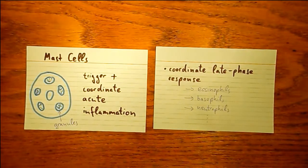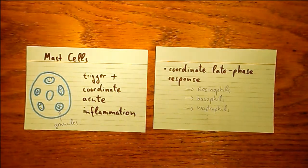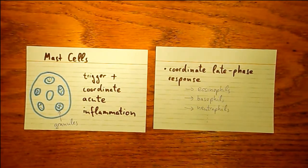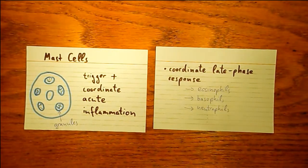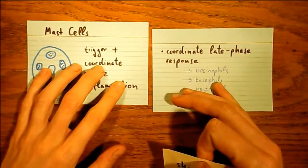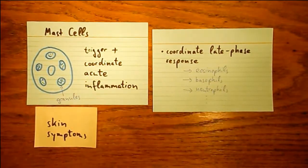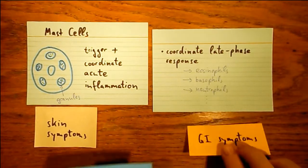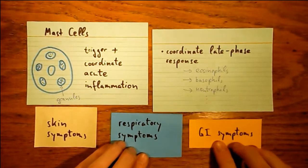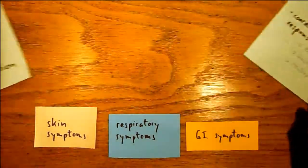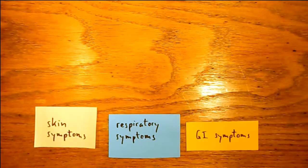It's maybe not surprising that we find mast cells mostly where the body comes into contact with pathogens or where there are frequent injuries — like the nose, the mouth, the feet, and the internal body surfaces, so the respiratory and the GI tracts. Depending on where in the body the acute immune reaction happens, we will see some redness, swelling, maybe constriction of bronchioles and mucus production, or some GI symptoms. So far, so good — that's just the innate immune system in action.